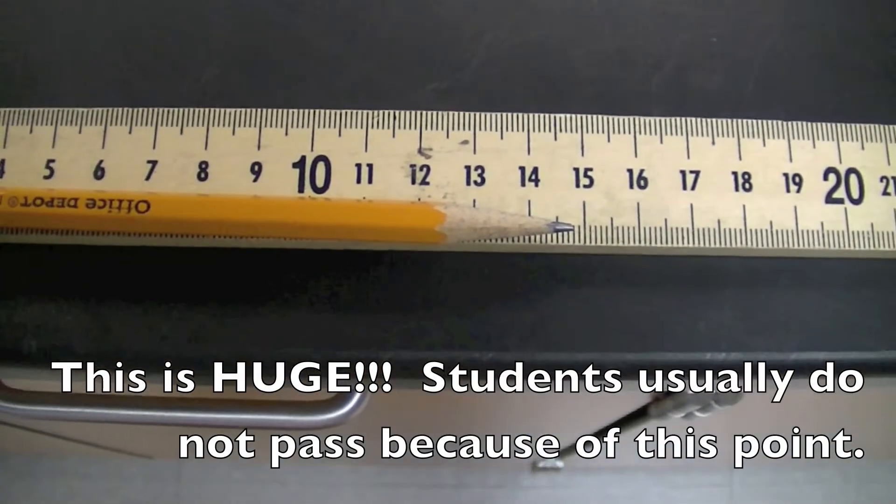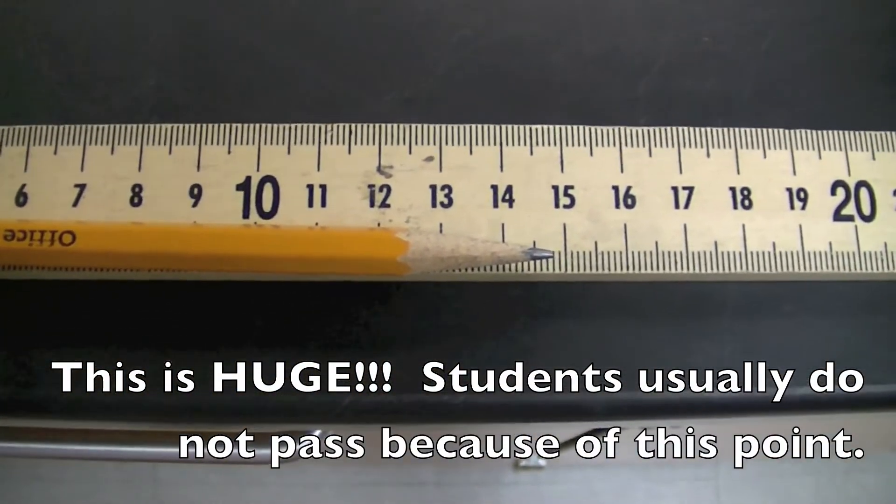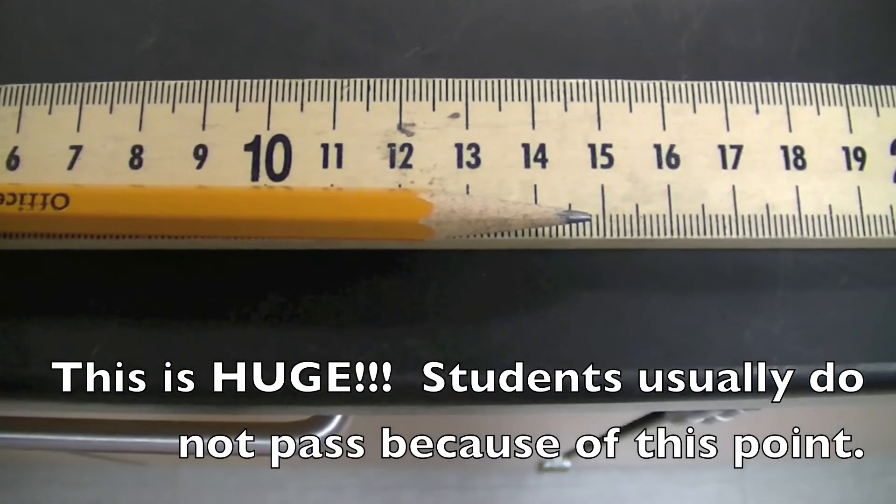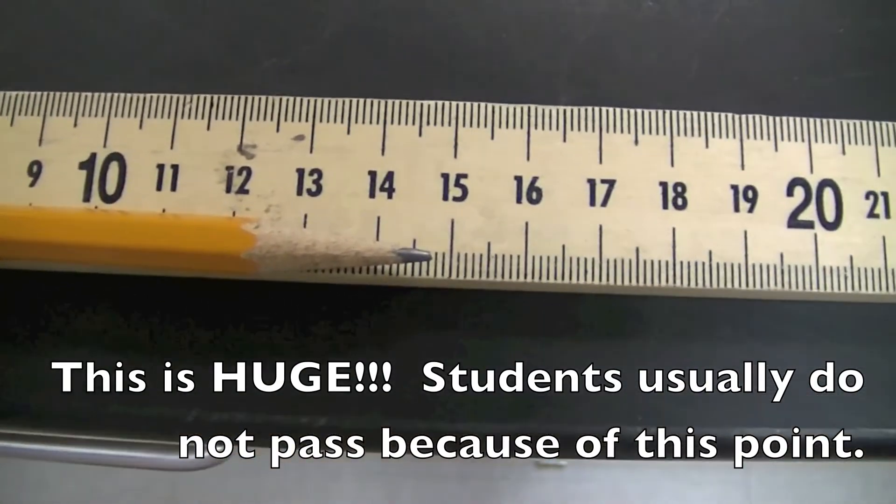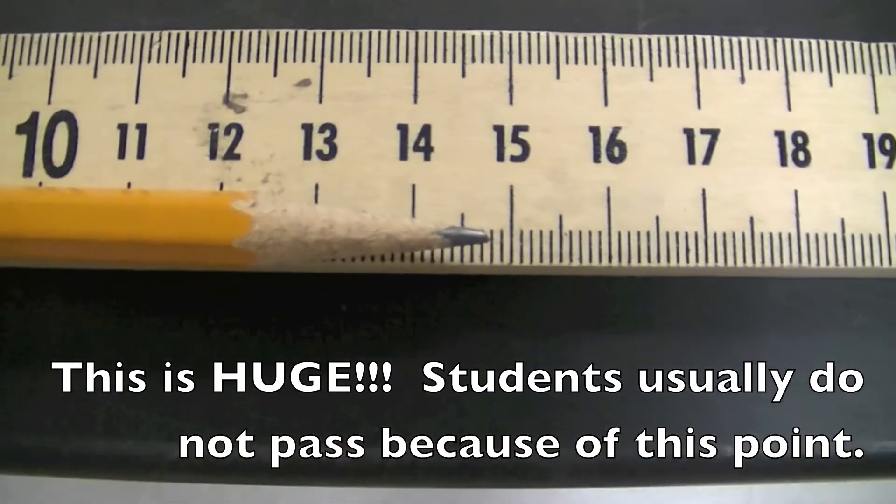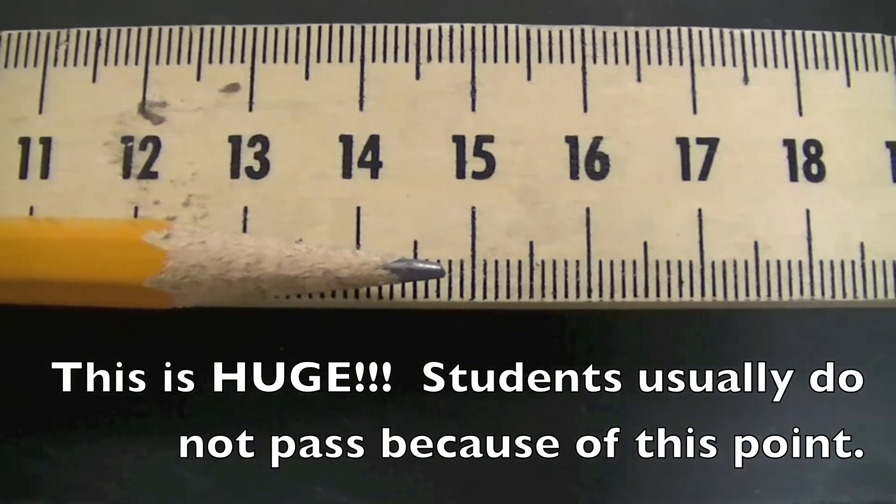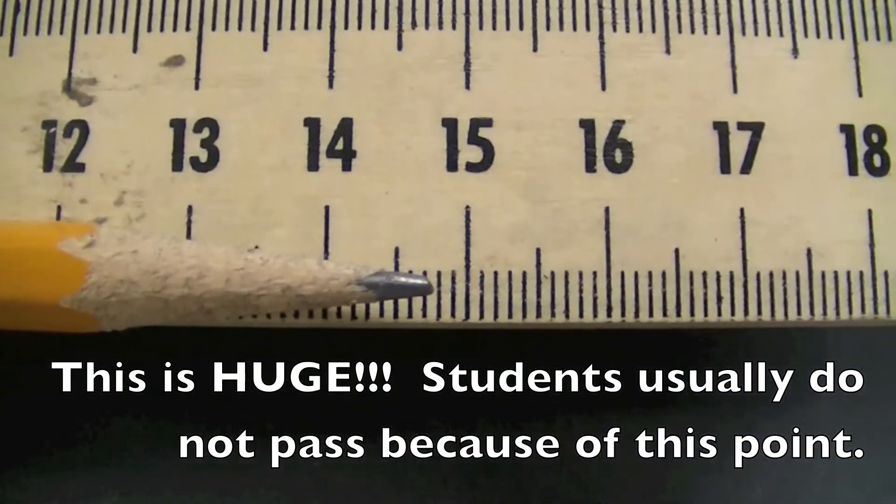Any time there are graduations or markings on a measuring instrument, we always want to estimate one digit past the graduations. What does that mean? Well, we want to be as close as we can when measuring something. So by estimating this, our calculations can be more accurate.